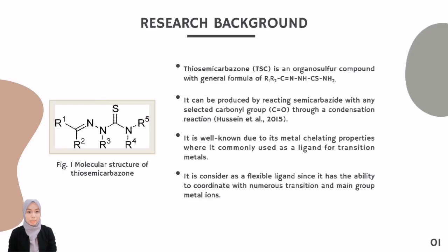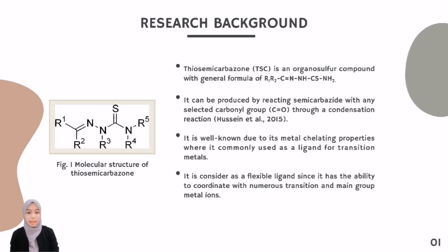Firstly, thiosemicarbazone (TSC) is an organic compound with the general formula R1, R2, C=N-NH-C(=S)-NH2, where it consists of a sulfur atom placed between both hydrogen atoms. TSC is produced by reacting semicarbazide with any selected carbonyl group such as an aldehyde or ketone through a condensation reaction.